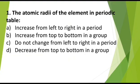MCQ 1. The atomic radii of the element in periodic table: a) Increase from left to right in a period, b) Increase from top to bottom in a group, c) Do not change from left to right in a period, d) Decrease from top to bottom in a group. Correct answer is Option B - increase from top to bottom in a group.